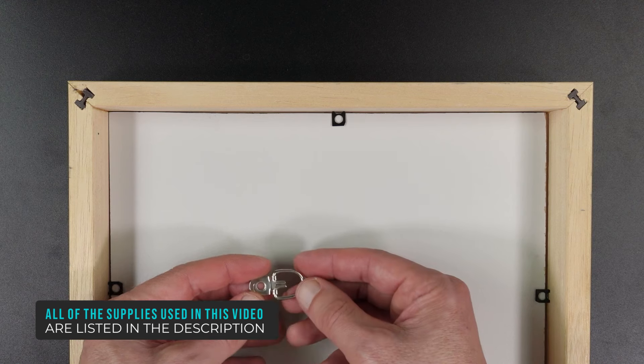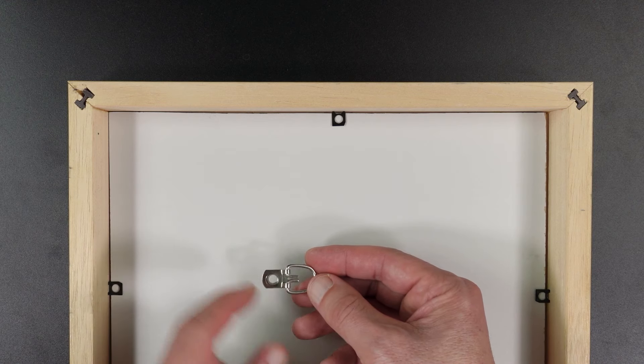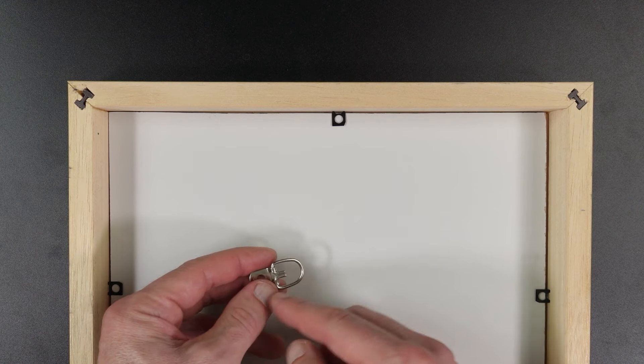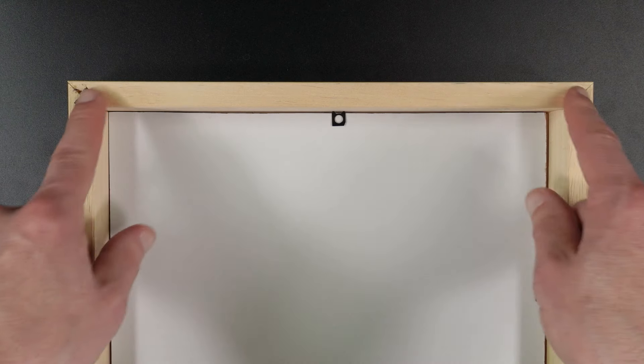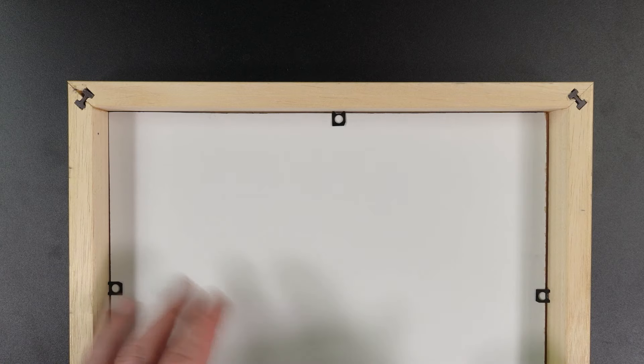They come in different sizes. This is good for small ones. There's larger ones that have a longer strap and a bigger ring. They also have two holes in there. A lot of times picture framers will glue a piece of paper like brown craft paper to the back just to protect it from dust.